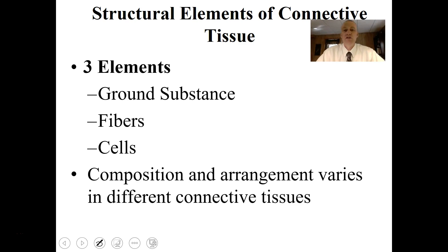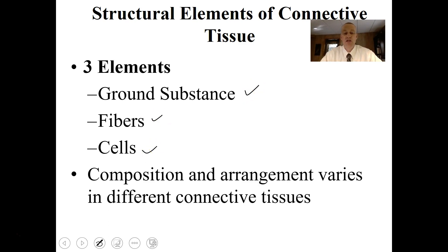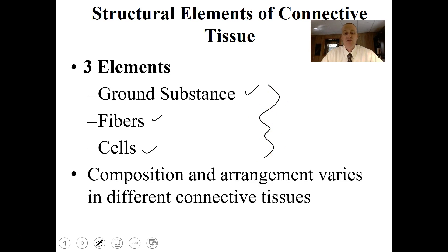When we look at the structural elements of connective tissue, they are made of the ground substance, fibers, and cells. Their composition and arrangement of these particular things varies in the different kinds of connective tissue. So we can build different kinds of connective tissues using different ground substances, different fibers, and different kinds of cells.